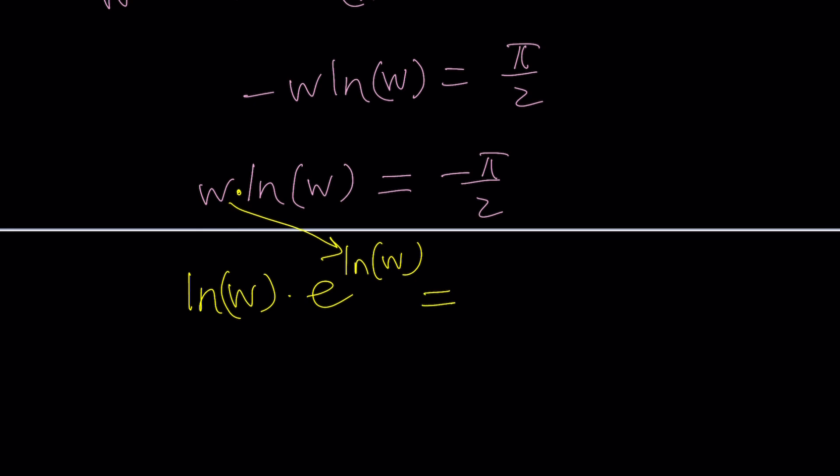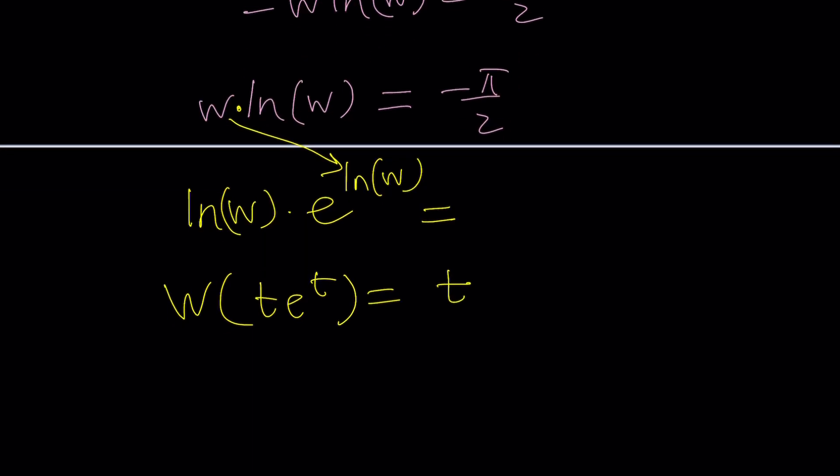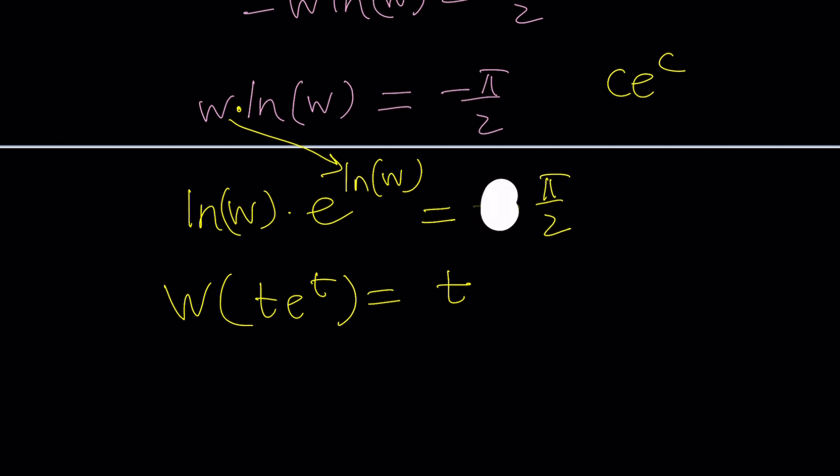Equals this. Now, I put it in te to the t form, and if I W it, I should be getting t from there. But I also want the right-hand side to be in that format, or at least be something like c e to the c, constant times e to the same constant. Make sense? That can be achieved by replacing negative π over 2 by negative 1 times π over 2, and then replacing the negative 1 with i squared, and then replacing i squared times π over 2 with.